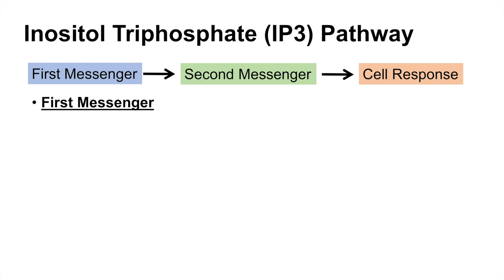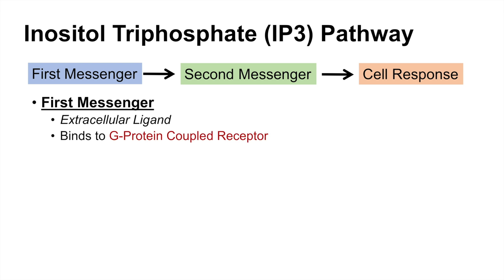The first messenger is an extracellular molecule or an extracellular ligand, whether that be a hormone or some other molecule, and in the IP3 pathway, the extracellular ligand binds to a G-protein coupled receptor. When the first messenger aspect of this pathway becomes activated, it leads to the activation of a second messenger response.